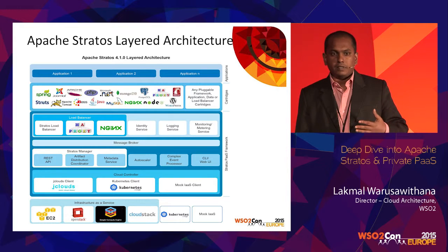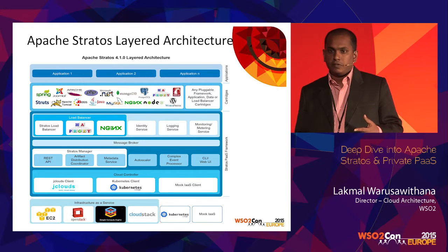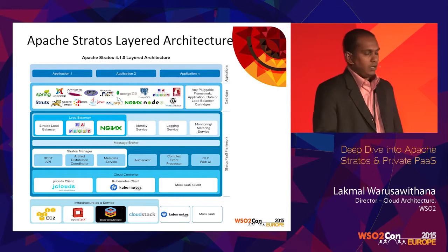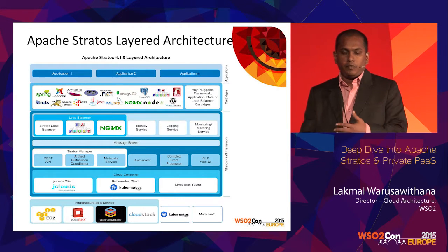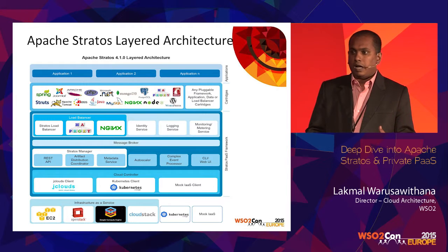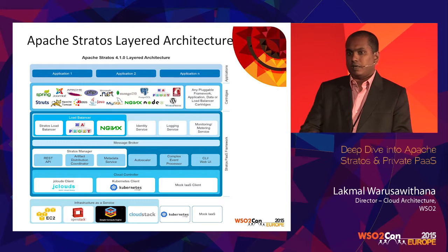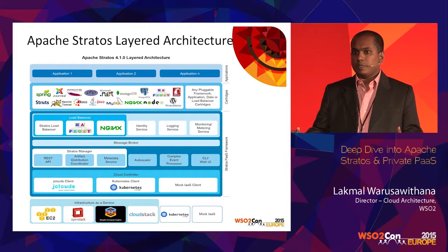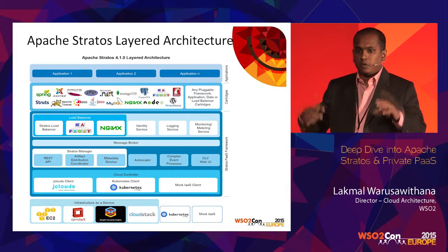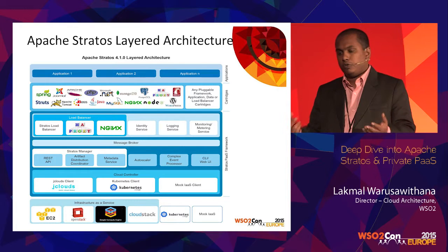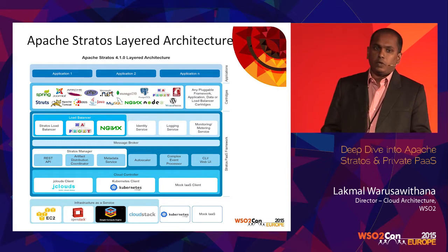Looking at the architecture, this is the new 4.1.0 release architecture. Comparing with 4.0.0, there are two main changes. In the top-most layer we have added the application layer. Previously you had to use direct cartridges and deploy your application across several cartridges. But with this release, using what we call Composite Application, you can define your application at the top-most layer by grouping several cartridges in a single relationship, and deploy your application.